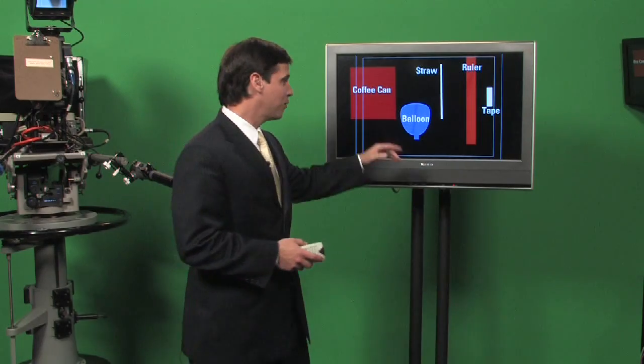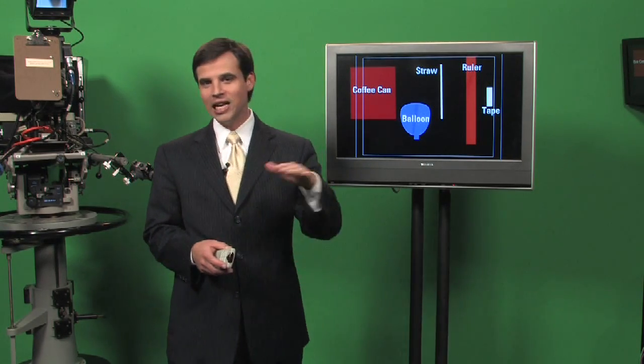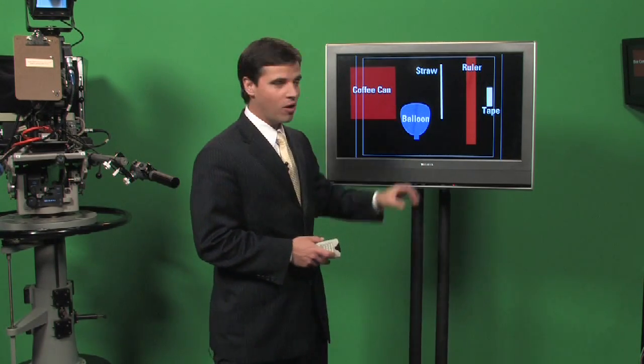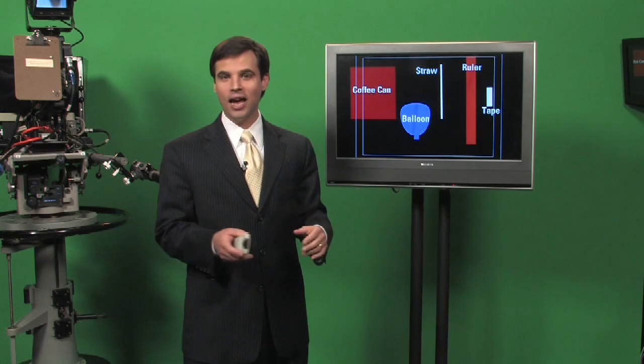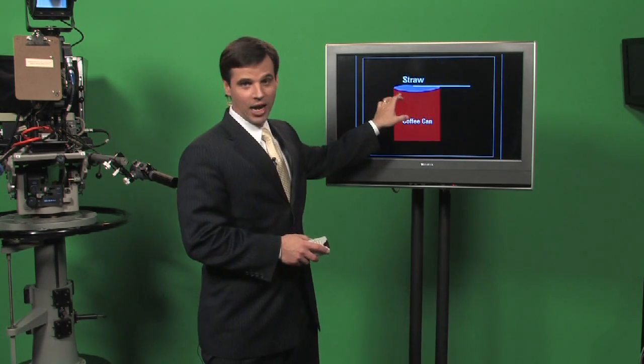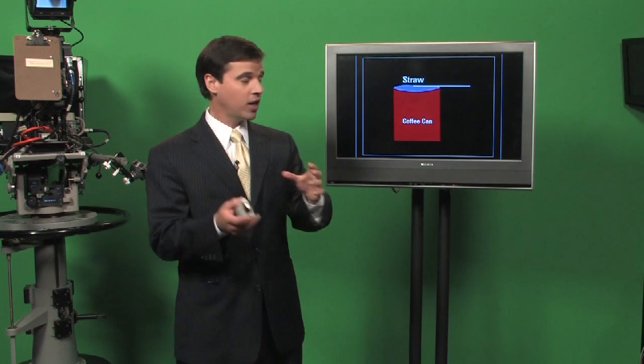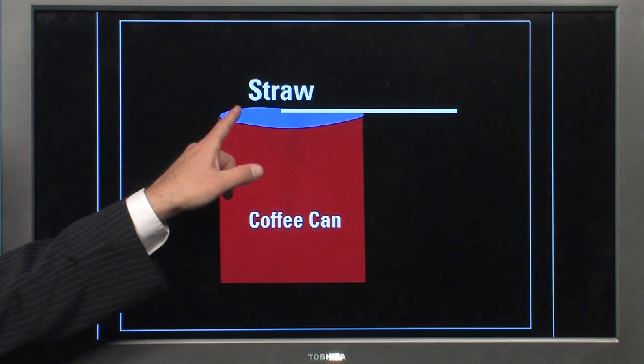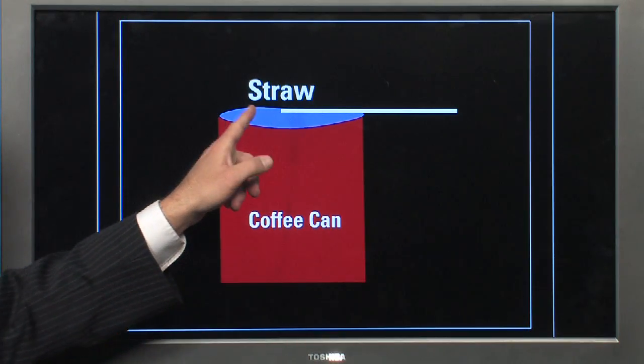Here's how it works. First of all, take the balloon and cut it in half so that you just have the top part of the balloon. Once you've got that, take that balloon and cover the open end of the coffee can. So now you've got the coffee can, the balloon is on the open end covering it. The bottom was always sealed up.